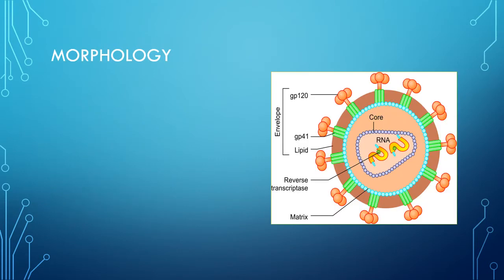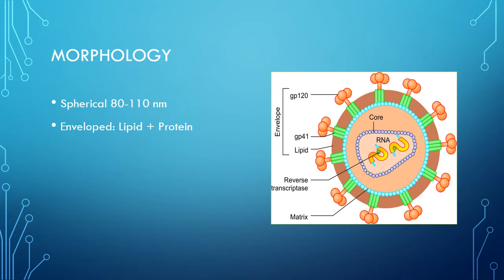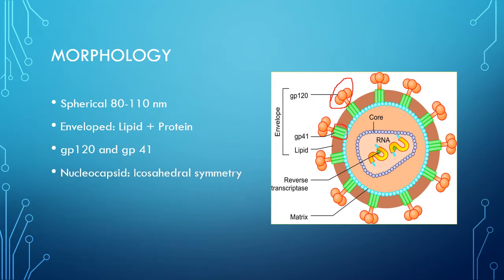HIV and other lentiviruses have a unique structure. They are spherical, 80 to 110 nanometers in size. The envelope is made up of a lipid part derived from the host cell membrane and a protein part with two components: gp120 and gp41. As seen in this picture, gp120 are projected as spikes, and gp41 anchors the transmembrane particles.